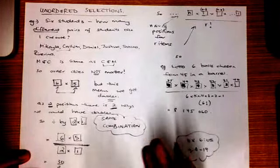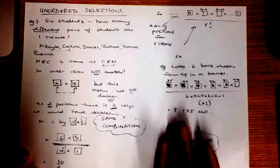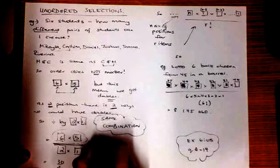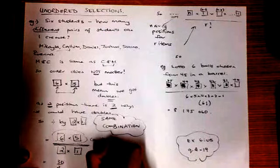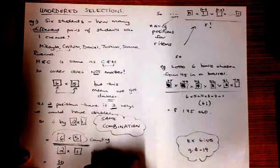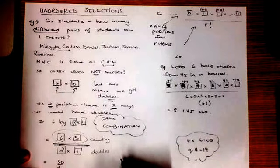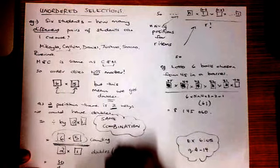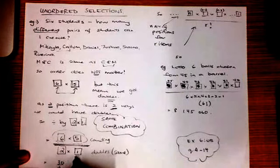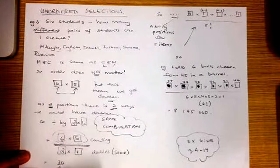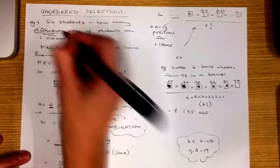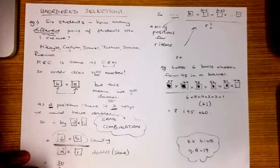That will be doubled up, tripled up, or whatever it happens to be. So six times five is my normal counting to calculate the number of possible pairs, but these include duplicates, so I've got to divide by how many are the same. Six times five is thirty, two times one is two — thirty divided by two gives me fifteen different combinations of pairs of students.